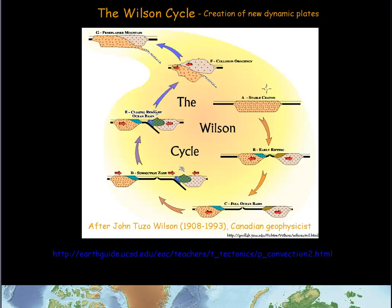Basically, what we start with is stage A, what's called a stable kraton — just a big piece of felsic granitic rock that makes up a continent. We actually have parts of these things in most of the major land masses today. What eventually happens is we get molten rock from down below which rises up and starts burning through this kraton, actually starts breaking it apart, and then we get a formation of new mafic rock that will make ocean crust. You can see ocean crust there and continental crust.